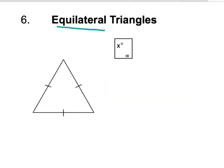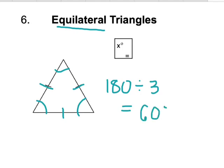For an equilateral triangle, all three sides are equal, which means all three angles have to be equal. The interior angles add up to 180, so to find three equal angles we divide 180 by three and get 60. So X equals 60 degrees.